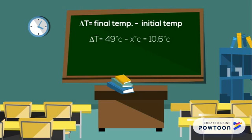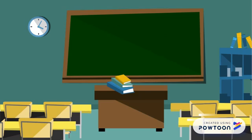So we are using delta T equals final temperature minus initial temperature is equal to 10.6 degrees Celsius. Now we get a final answer of 59.6 degrees Celsius. That is our initial temperature.